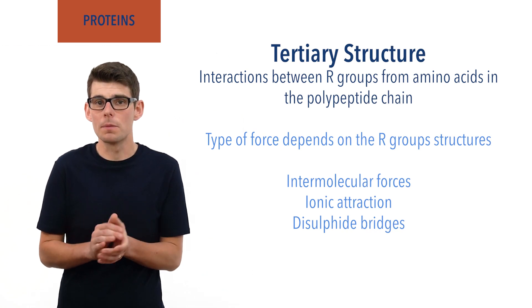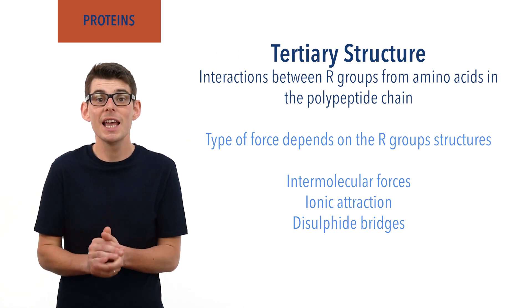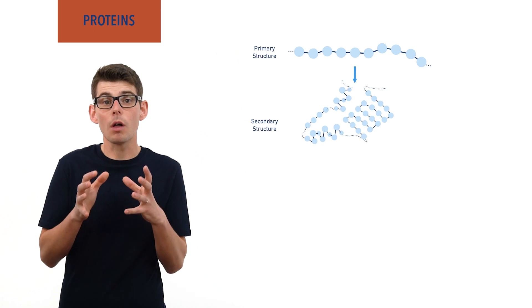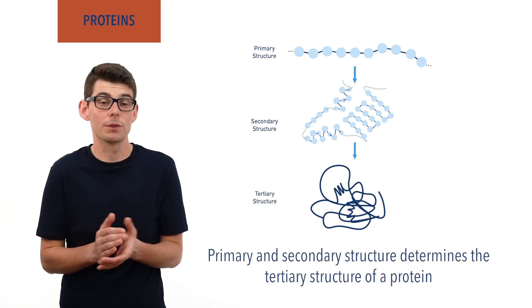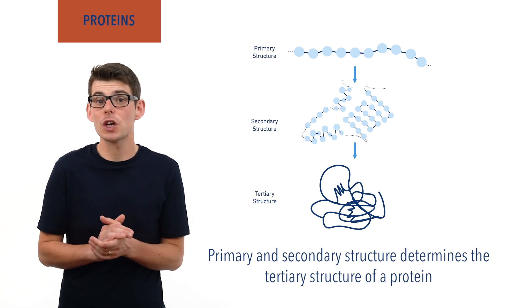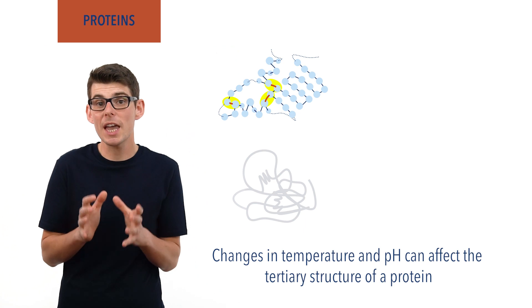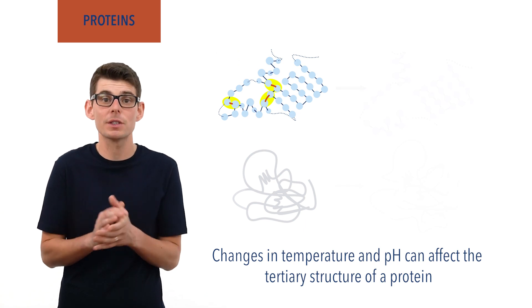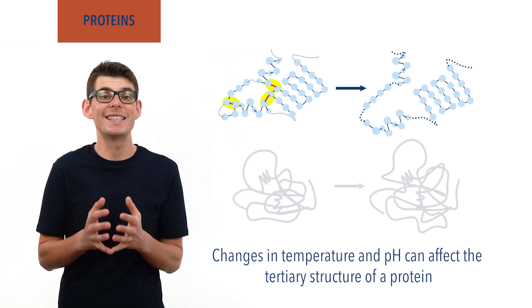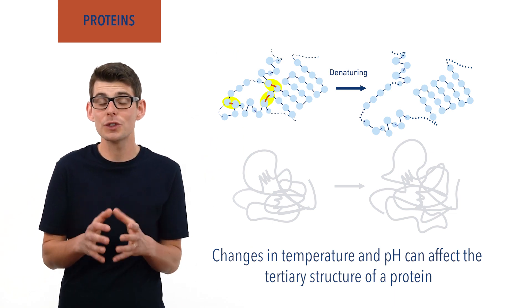As only certain R groups experience attraction to each other, the exact folding that occurs in the tertiary structure of a protein is based on the positions and orientations of R groups, meaning the primary and secondary structure will ultimately determine the tertiary structure that arises. Changes in temperature and pH conditions can affect the tertiary structure of a protein as the bonding between R groups is quite easily altered. This can change the structure and shape of the protein ever so slightly, meaning it no longer functions as it should. This is referred to as denaturing, and to prevent it from occurring, living organisms have to maintain near constant internal conditions.